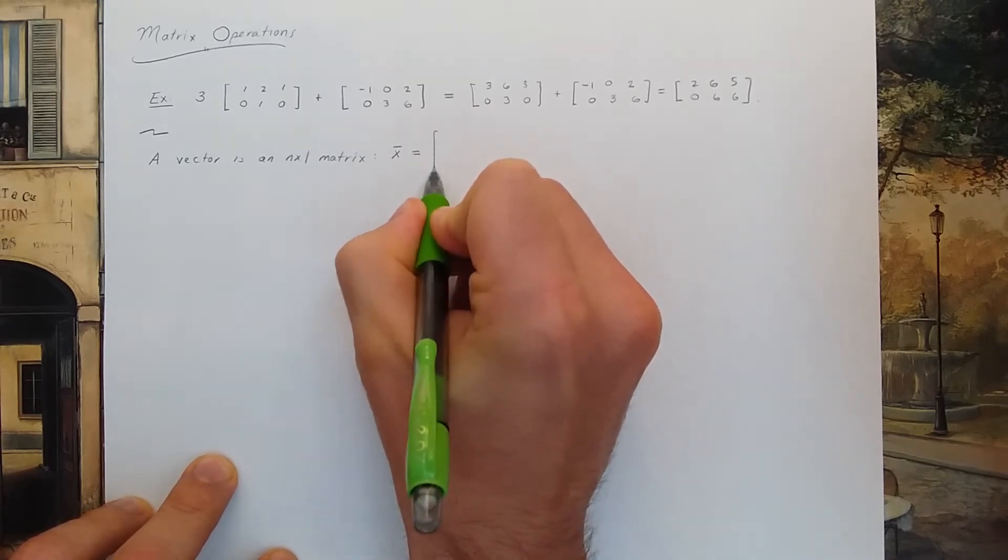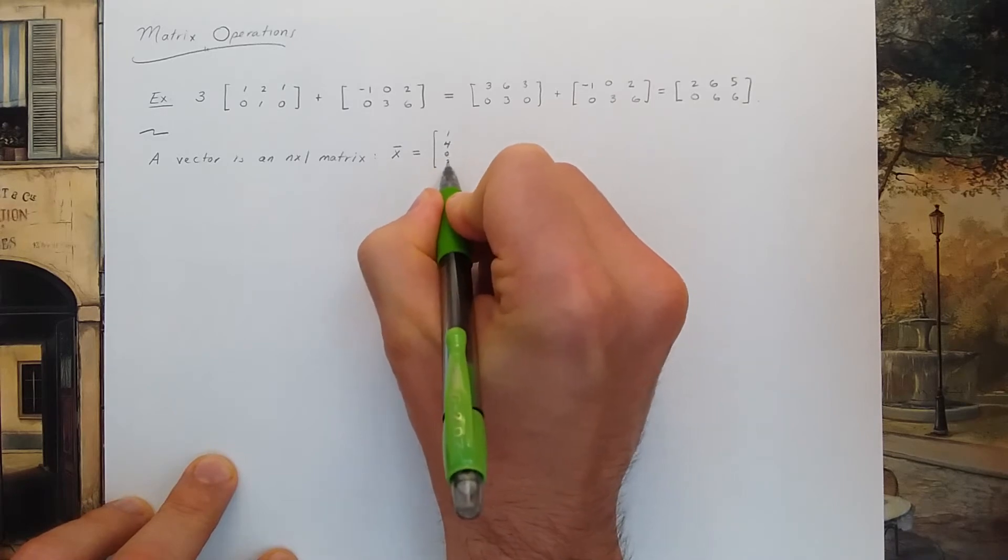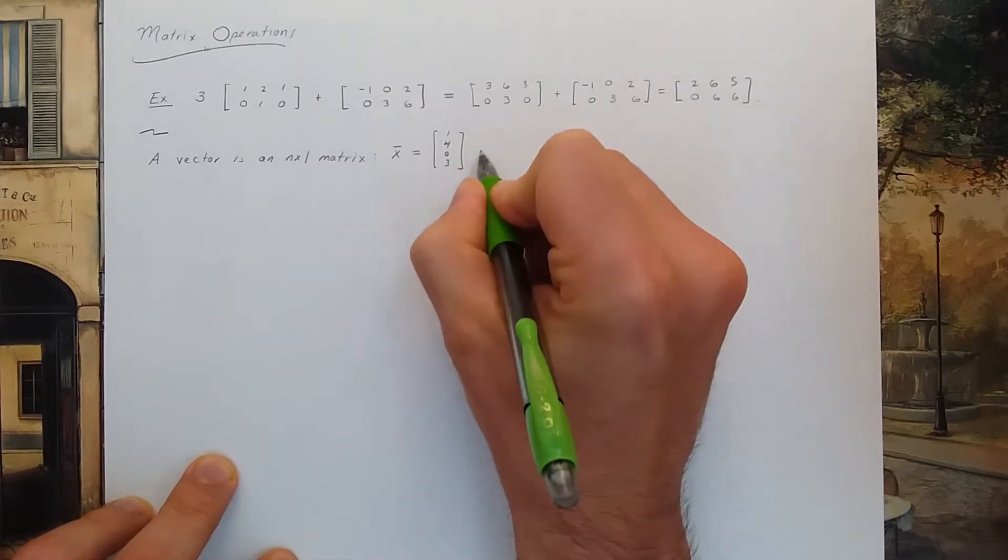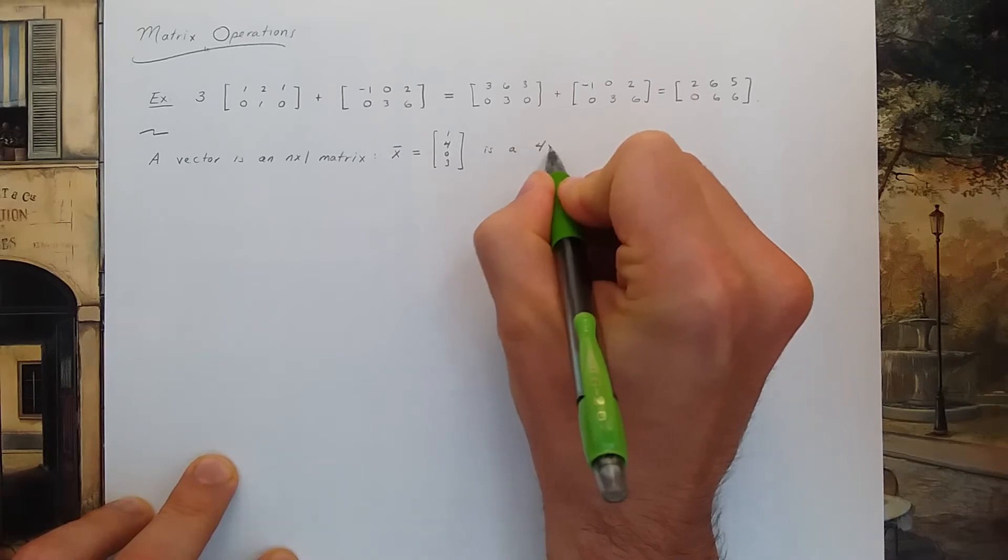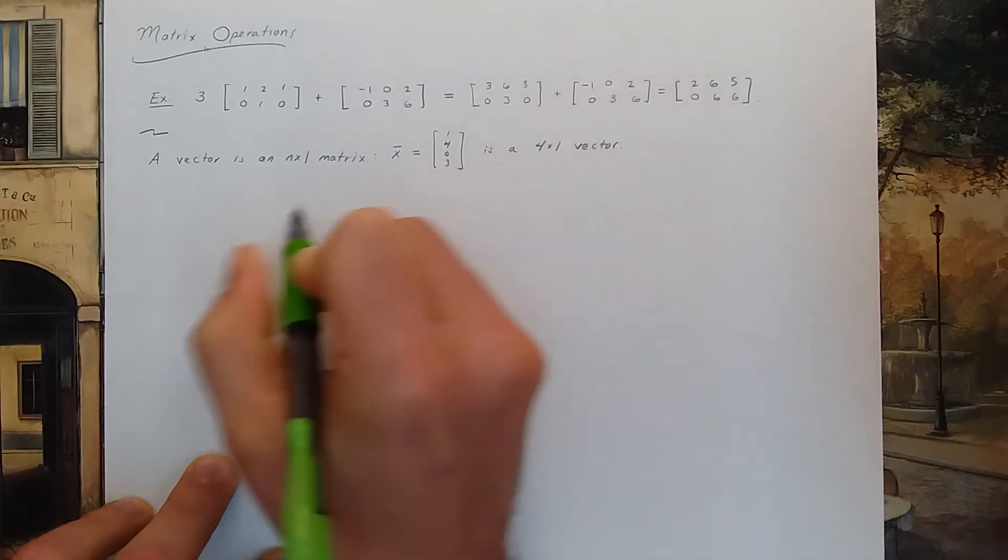For example, x could be 1, 4, 0, 3. This is a 4 by 1 vector or a 4-dimensional vector.